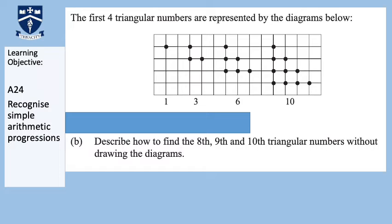Have a read of the question on the screen. It says: describe how to find the 8th, 9th, and 10th triangle number without drawing the diagrams. Think back on everything we have just looked at — you should have made notes as we went through it. You can also go back in the video. Without drawing shapes 8, 9, and 10, how do we work the number of dots out? Come back to the video once you have done that.